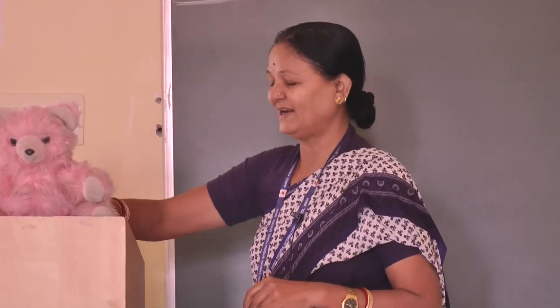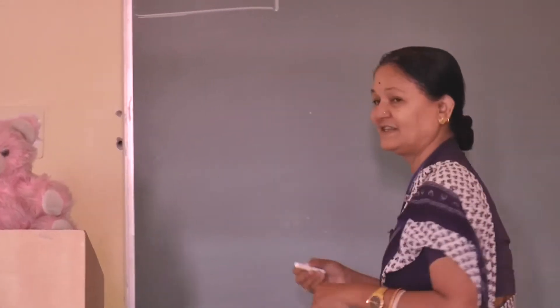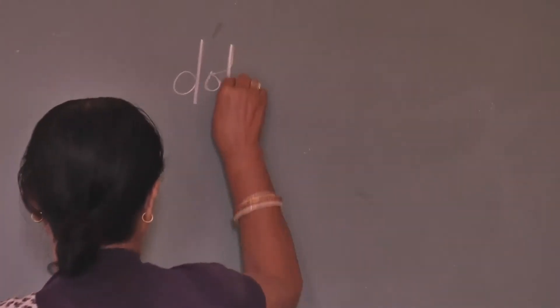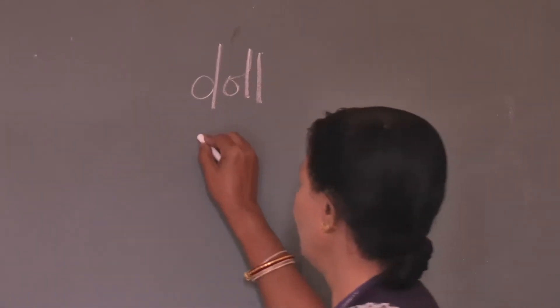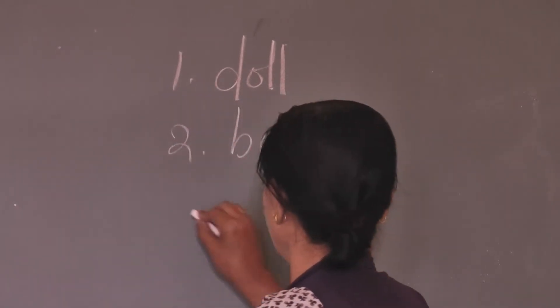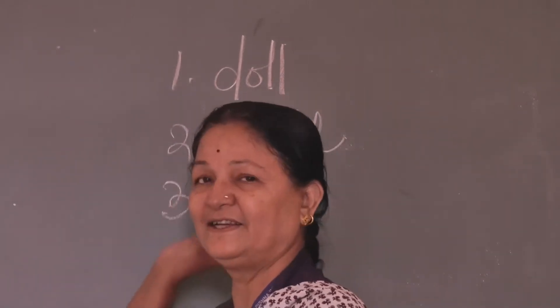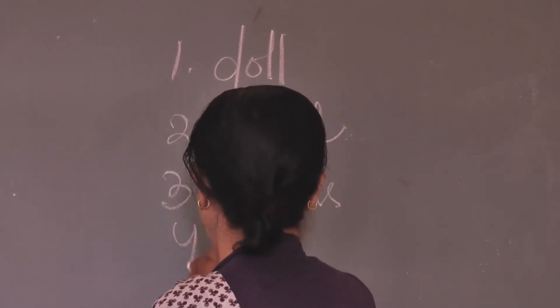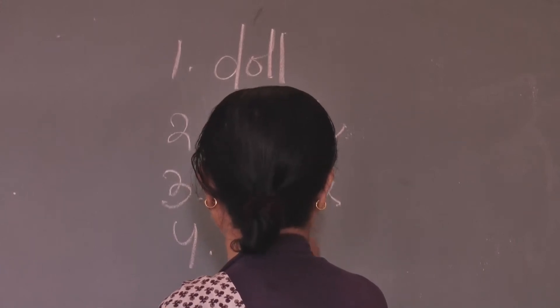The birds, how beautiful they are! So many things we are seeing. Now you open your copy and write down what things we are seeing in this classroom. First we have seen the doll, next it is ball, third it is birds — different kinds of birds — and fourth it is duster.